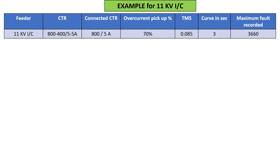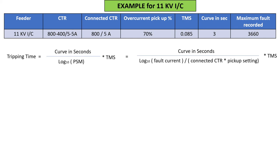Taking the example of 11 kV incomer, these are the available details that we need to set: CTR, connected CTR (we selected 800/5 A), pickup percentage set in the relay at 70%, TMS at 0.085, curve, and fault current recorded at 3660 A. Now let's find the pickup current. Multiply CTR 800 ampere with pickup percentage 0.7, so our pickup is 560 ampere.